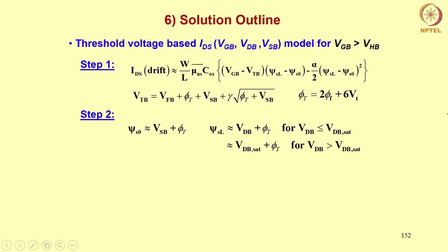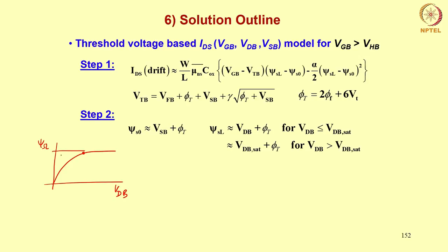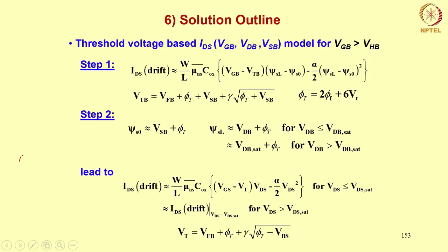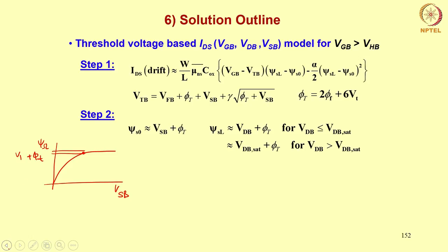As we said in step 2, we replace ψs0 by its saturation value Vsb plus φt, and ψsL by its saturation value as given. I want to remind you about those saturation values. This is the ψs versus V curve — this is the saturation value. When I put Vdb here I get ψsL. Very close to that saturation, this value is Vdb plus φt.